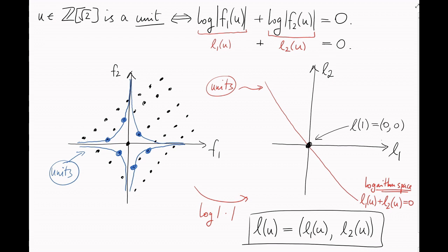Or, for example, the element 1 minus root 2 is a unit. And on the left-hand diagram, it's here. So, on the right-hand diagram, taking logs, it's here.